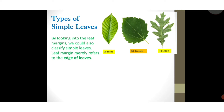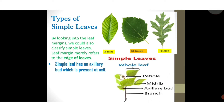The next point: a simple leaf has an axillary bud which is present at the axil. Look at the picture — this is the simple leaf image showing the petiole, midrib, axillary bud, and branch. In a simple leaf the axillary bud is present at the axil.